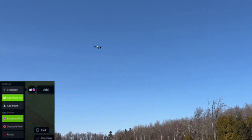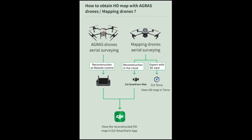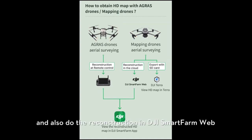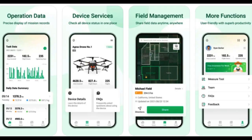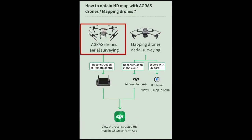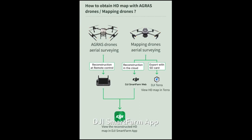Today I would like to introduce you a totally new method. You can use MAP3M to map the field and do the reconstruction in DJI Smart Farm web. The HD map will be generated and automatically updated to your DJI Smart Farm app on your cell phone. You could also use the T40 remote controller mapping function, and those HD maps will be automatically updated to the DJI Smart Farm app as well.